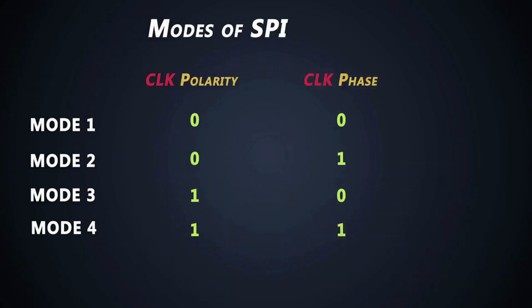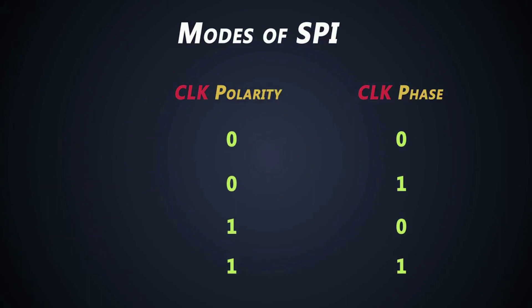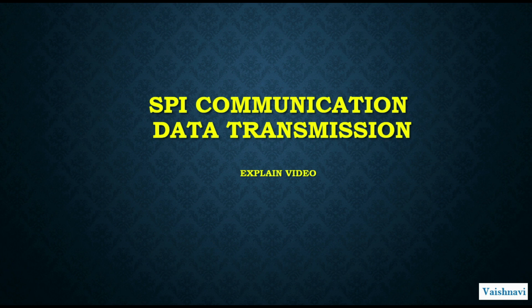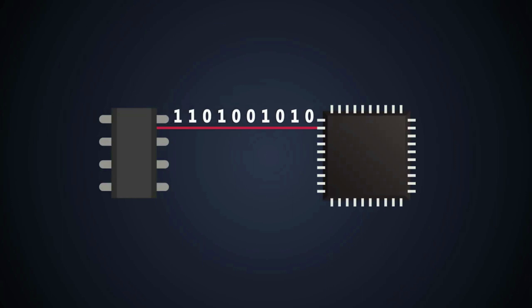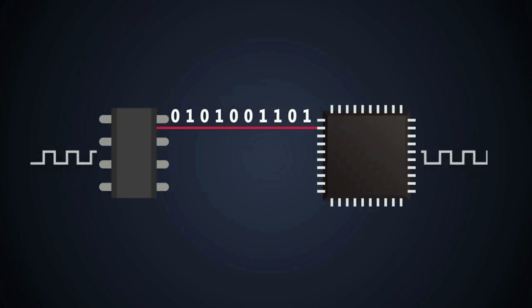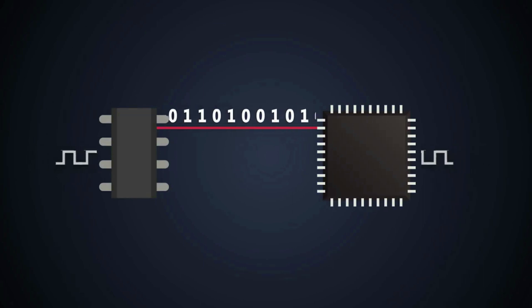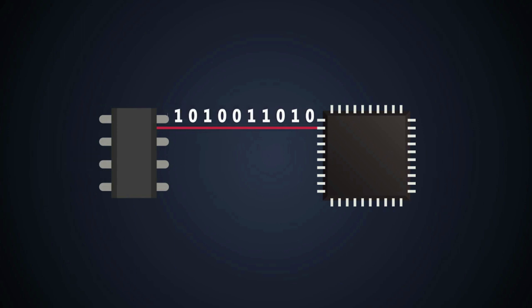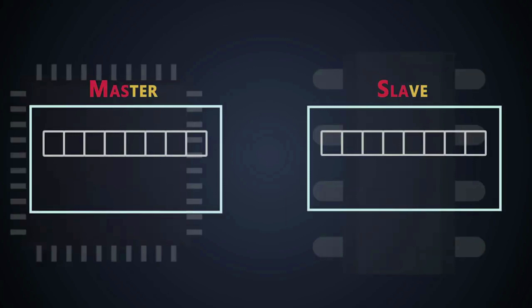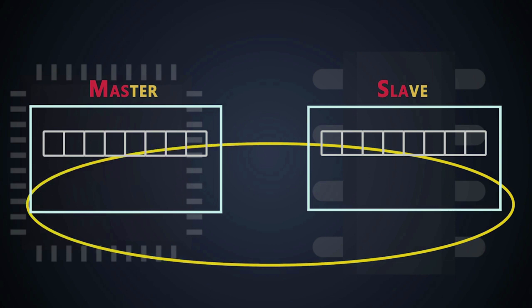These were the modes of SPI communications — that's the basics. Now we will see SPI communications data transmission and how it works. We look into how data transfers between master and slave devices in the SPI communications protocol. To start, we need to see the hardware and internal blocks of master and slaves. There are shift registers in both master and slave devices. The slave and master are connected such that the two shift registers form a circular buffer.